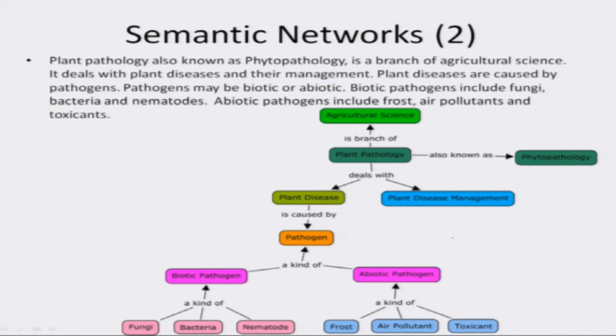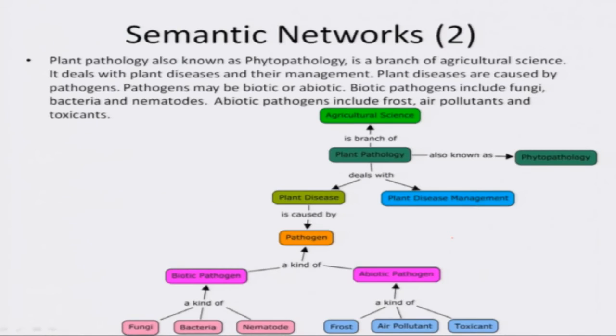Now let us see how to draw a concept map from knowledge represented in natural language. It is a three-step process. First, we identify the concepts; then we identify the relationships between the concepts; and finally, we plot the concepts and relationships into the concept map. For example, consider plant pathology.